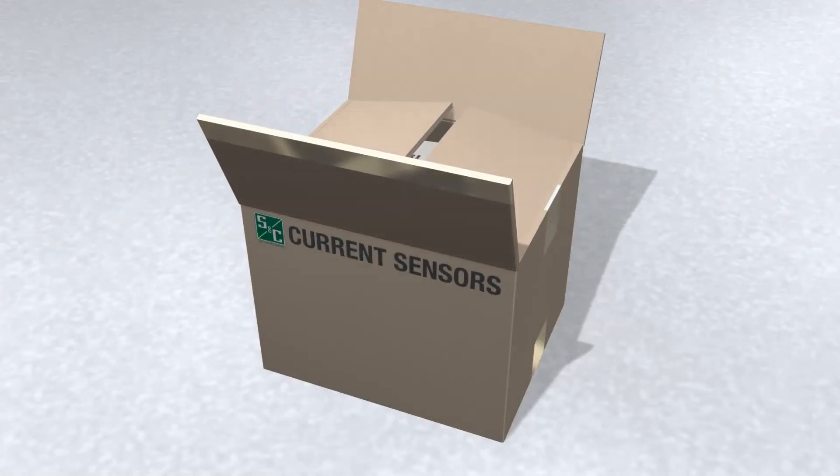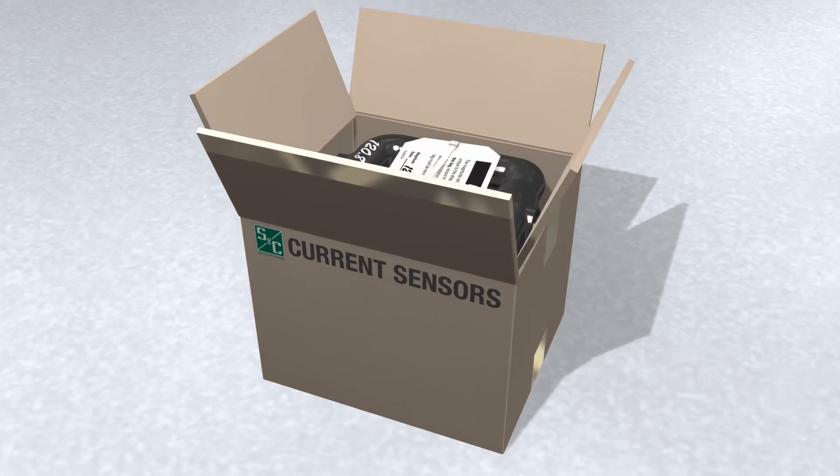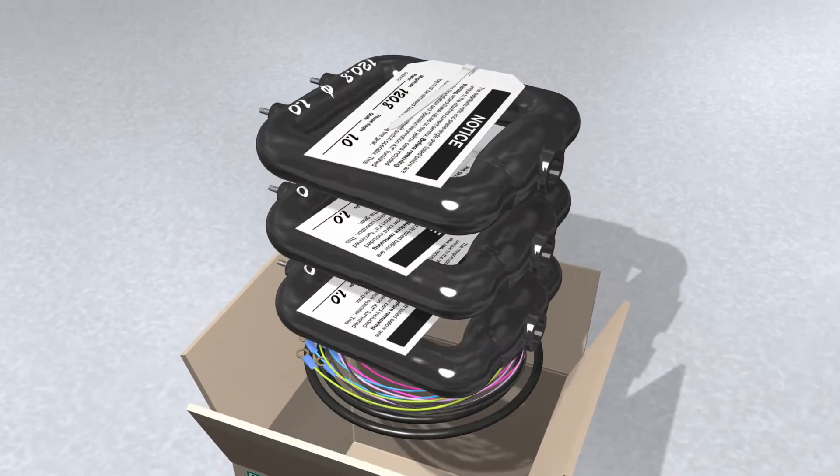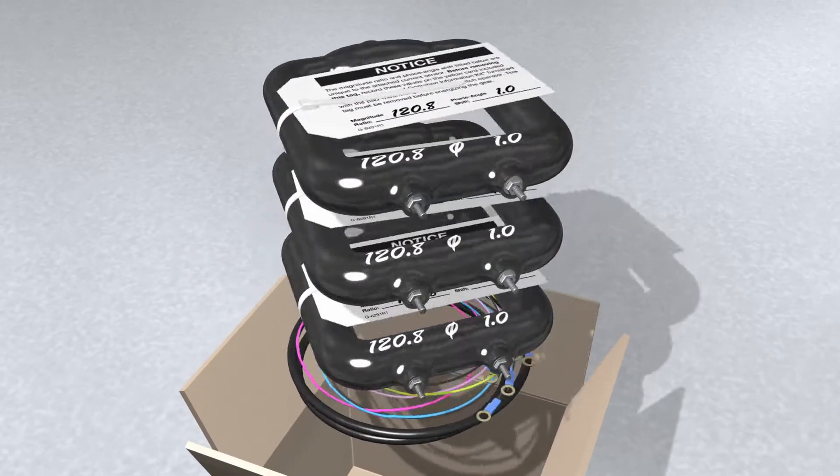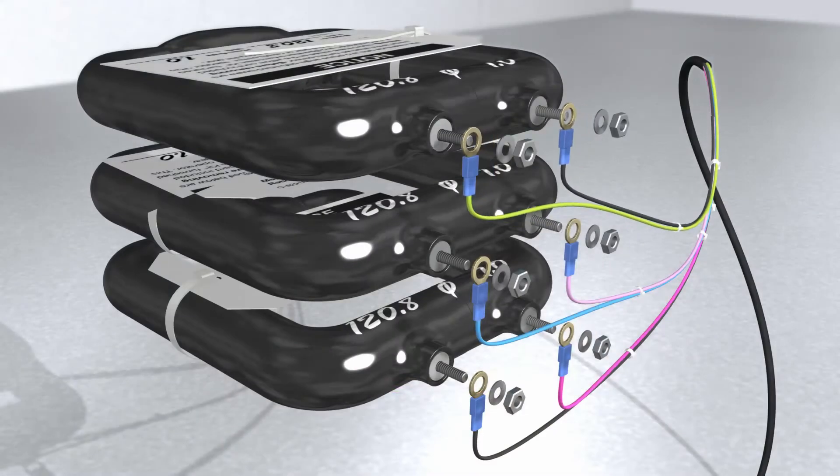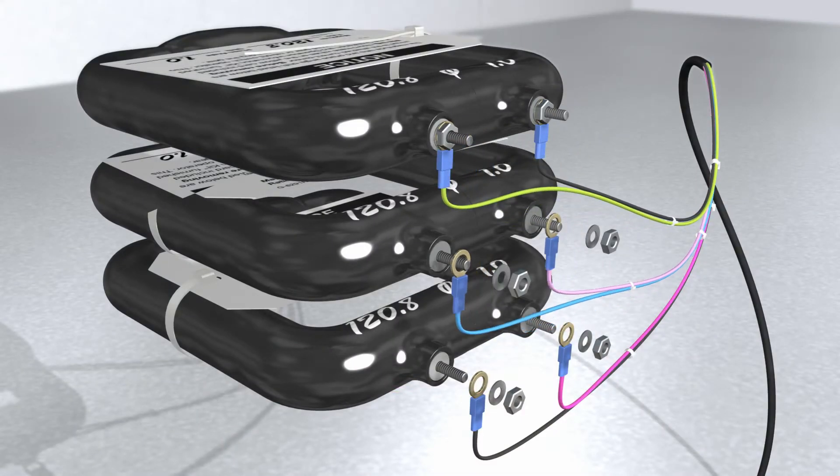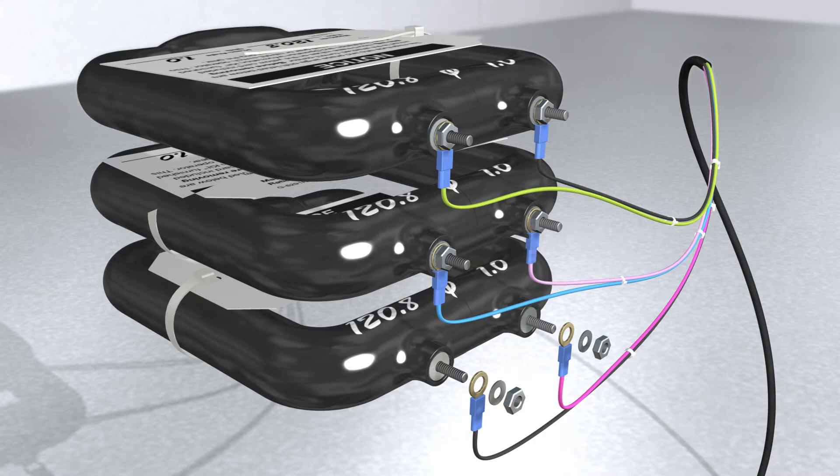First, remove the current sensors, hardware, and wiring harness from the box marked SNC current sensors. Then connect the current sensors to the wiring harness as shown on the interconnection wiring diagram provided with the gear.